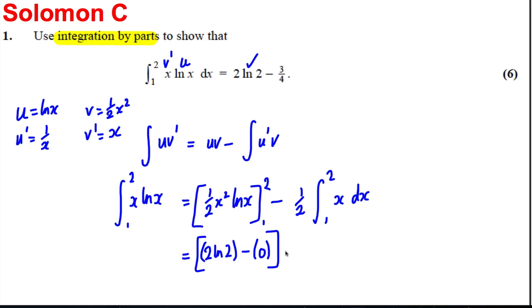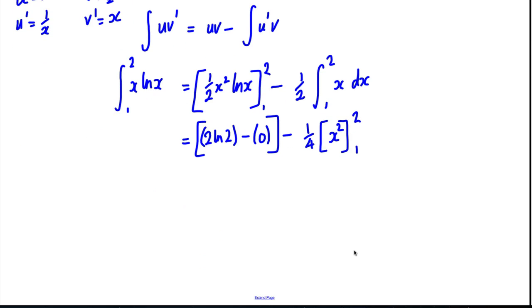And then it's going to be, actually integrate this would be half x squared, so it's going to be negative a quarter x squared. So I'm just going to put the brackets around this here and put two and one in. So we've got two ln two here and we've integrated this so subtract a quarter, what happens when you put two in you get four, what happens when you put one in you get one.